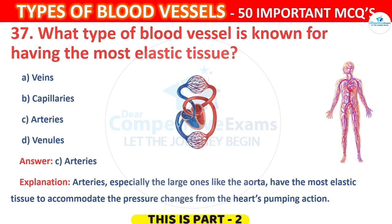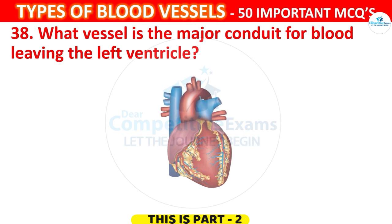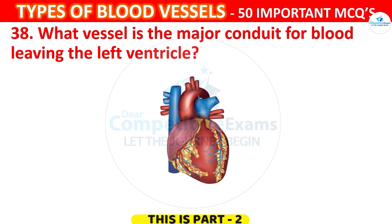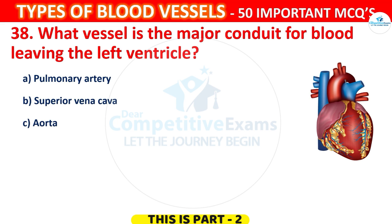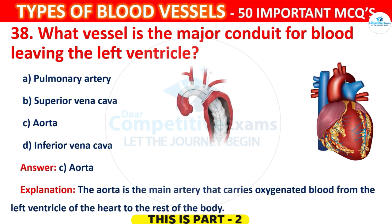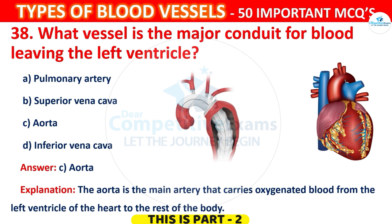Question 38. What vessel is the major conduit for blood leaving the left ventricle? The options are: Pulmonary artery, Superior Vena Cava, Aorta, or Inferior Vena Cava. The correct answer is C, the Aorta. The Aorta is the main artery that carries oxygenated blood from the left ventricle of the heart to the rest of the body.